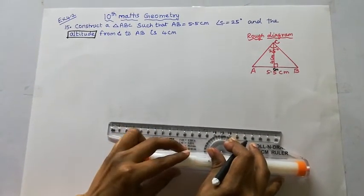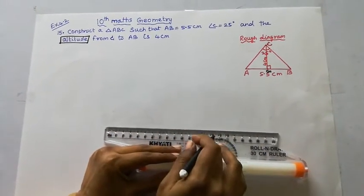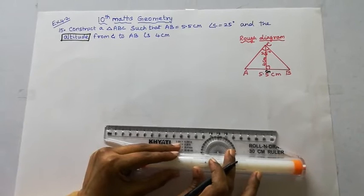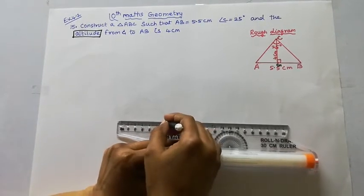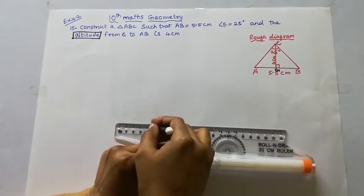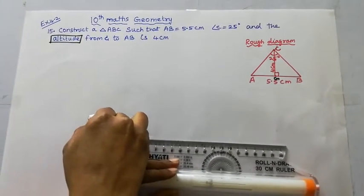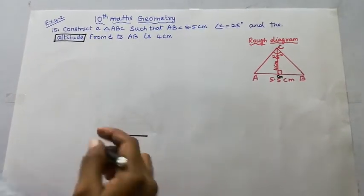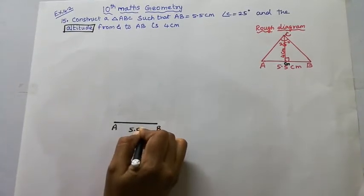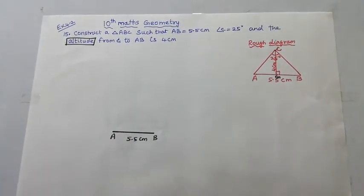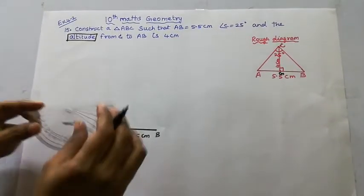Steps of construction. First, draw AB equal to 5.5 centimeter.